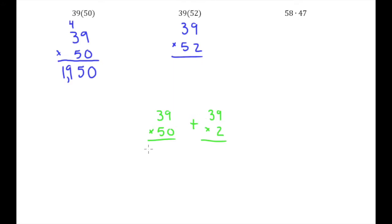So right here we already know the answer to this from our work in the previous example. This is 1,950. And right here 2 times 9 is 18. 2 times 3 is 6 plus 1 is 7. And then we want to add the two together. So we're going to take 78 plus 1,950. So 8 plus 0 is 8. 7 plus 5 is 12. 1 plus 9 is 10. So we have 2,028 as our answer.